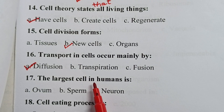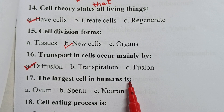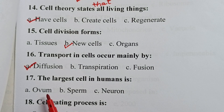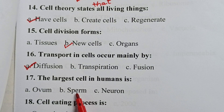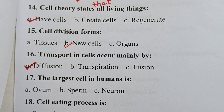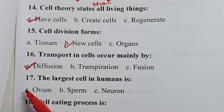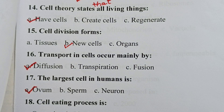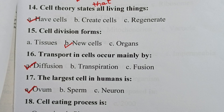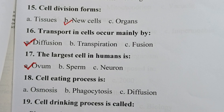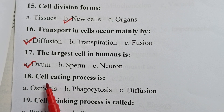Question seventeen: the largest cell in humans is — is it ovum, sperm, or neuron? Your correct answer is ovum. The egg cell found in females is the largest cell in humans.